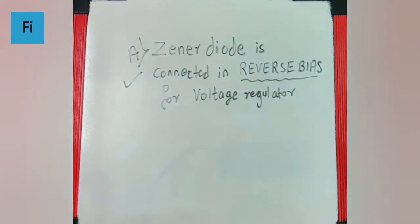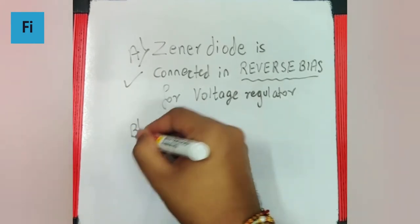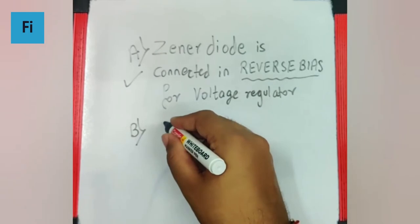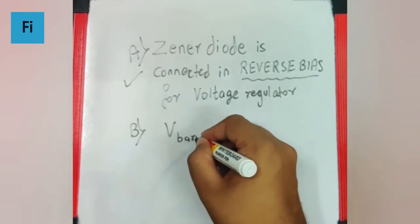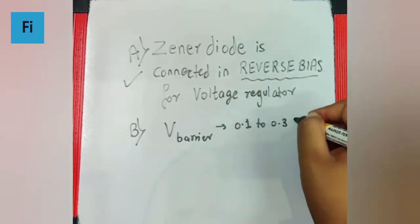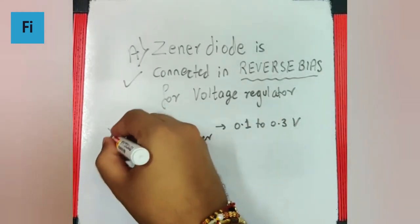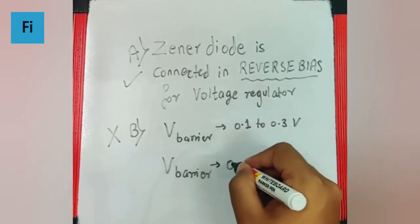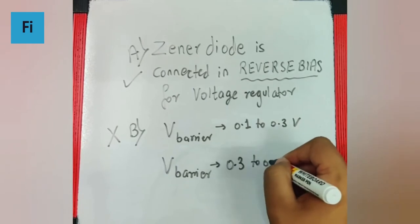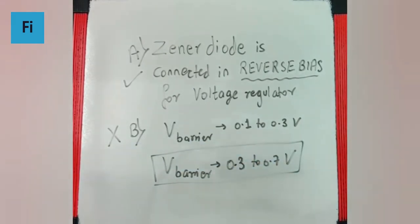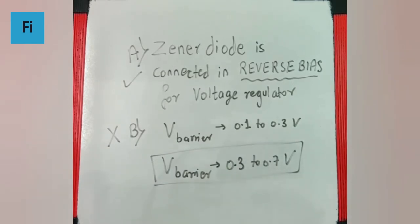Statement B says the potential barrier of a PN junction lies between 0.1 to 0.3 volts — that is incorrect. The correct value is that the potential barrier lies between 0.3 to 0.7 volts. So statement A is correct but statement B is incorrect, and that is the final answer.